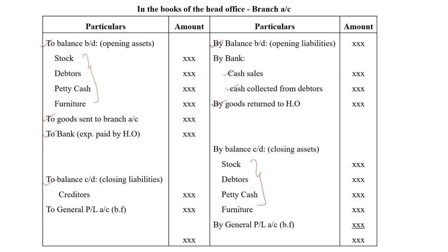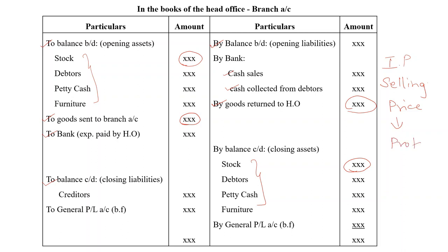The additional entry we are giving here is because the head office sends goods to the branch at invoice price — that is, at selling price. This means the opening stock, goods sent to branch, closing stock, and goods returned to head office are all recorded at selling price. If we record at selling price, we cannot arrive at the true profit or loss. So we must remove the profit element from the selling price by calculating stock reserve.